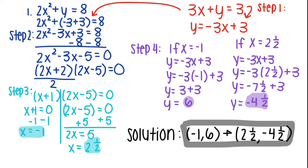Now that you're finally done with all those steps, you get your solution. There's two solutions since there's two different equations in the beginning. Your first answer is x is negative 1 and y is 6. And your second answer, x is 2 and a half and y is negative 4 and a half.